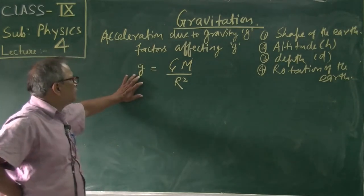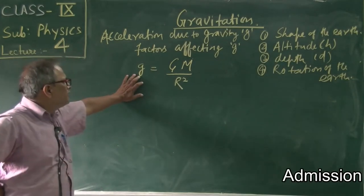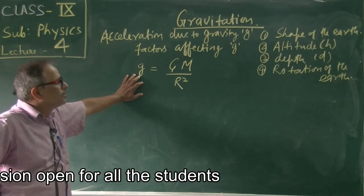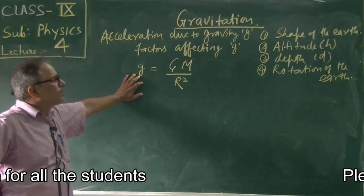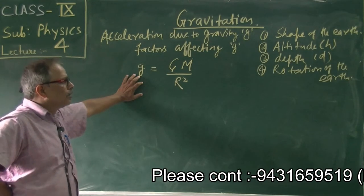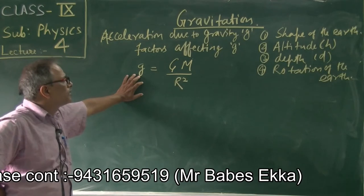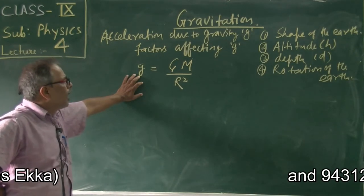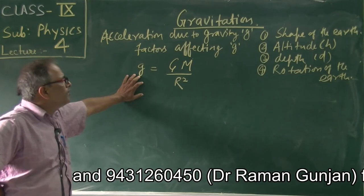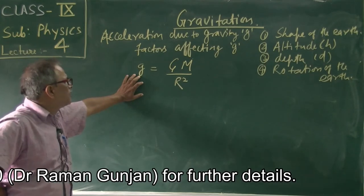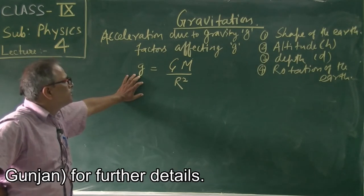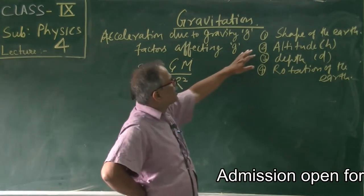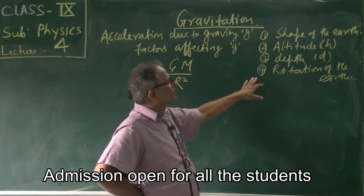The question is: is g variable? The answer is yes — by changing the position or direction of the object on the surface of the earth. The value of g depends on four factors.